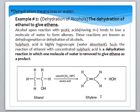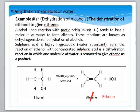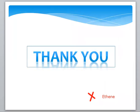The product formed is ethene. So when ethanol undergoes dehydration with concentrated sulfuric acid, ethene is produced as the product. I hope you have understood these five questions. If you have any questions, please ask. Thank you.